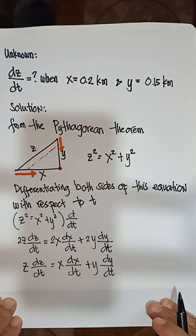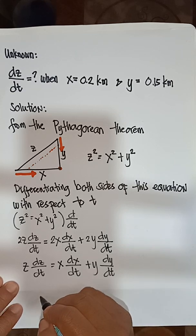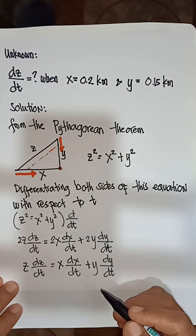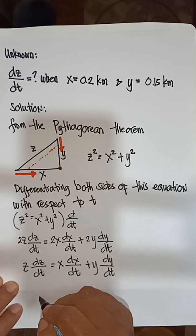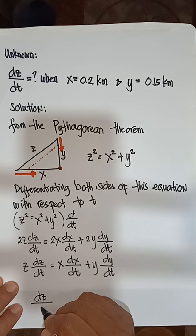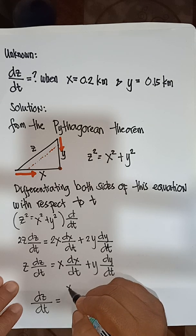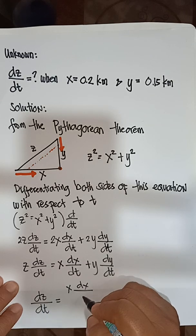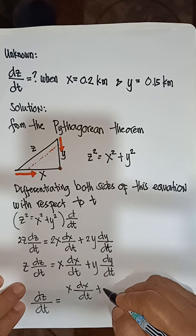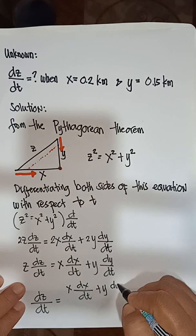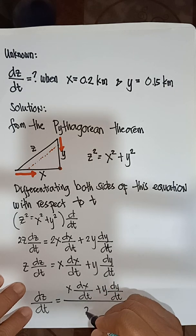Solving for dz/dt, we get: dz/dt = (X · dx/dt + Y · dy/dt) / Z. Now we substitute the given values.